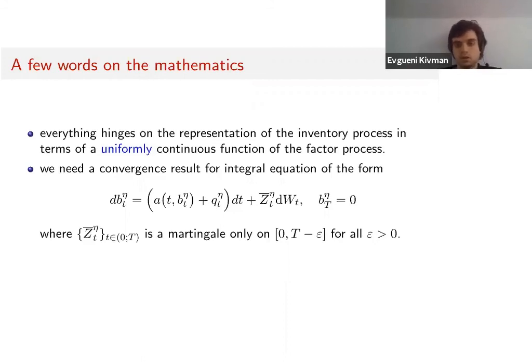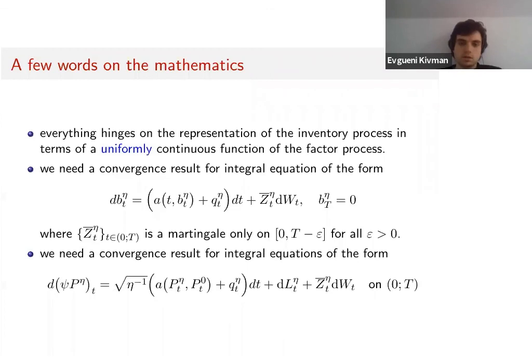We need a convergence result for integral equations of the form you see there. So we want to prove that this small b goes to zero if some conditions hold as η goes to zero. The tricky thing here is that we can only expect that this martingale there on the right-hand side is a martingale not on a whole time interval but only on every time interval that does not include T.